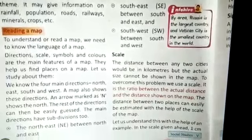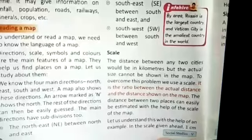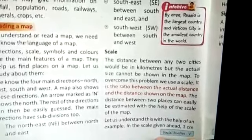The next main feature is scale. A scale is used to find the distance between two places. It is a ratio between the actual distance and the distance shown on the map. On the map, everything appears very near, but in reality all the cities and countries are very far, so a scale is used. We can see the scale at the bottom of maps — it shows the measurement. A distance between any two cities could be in kilometres, and a scale is used to find that distance.